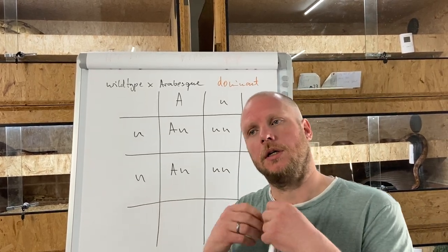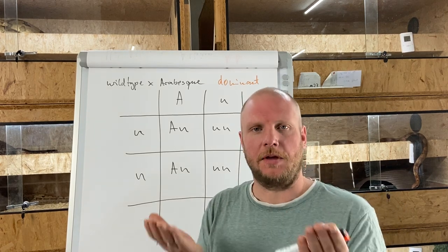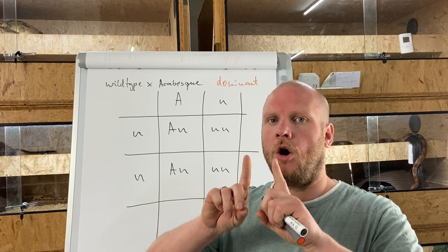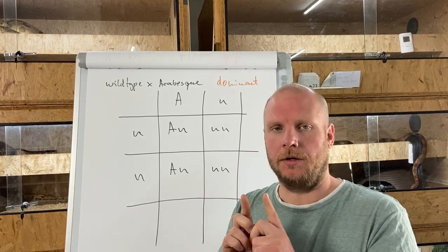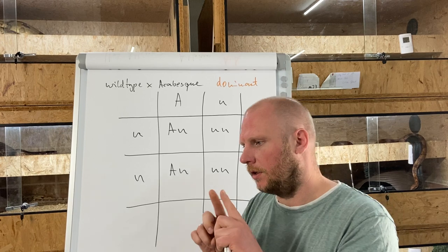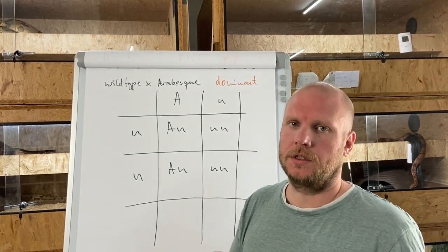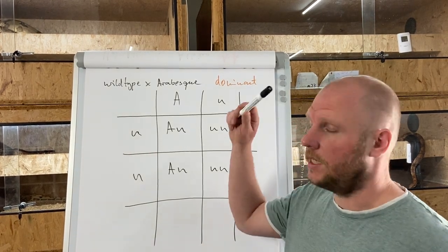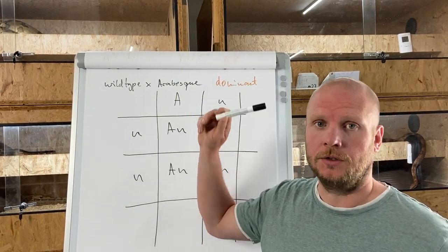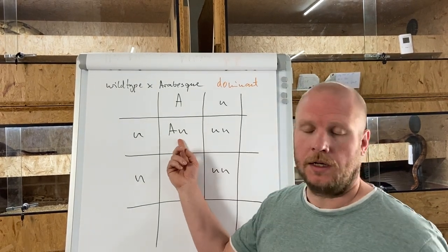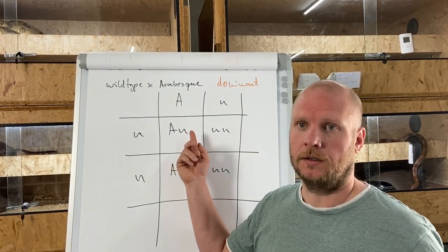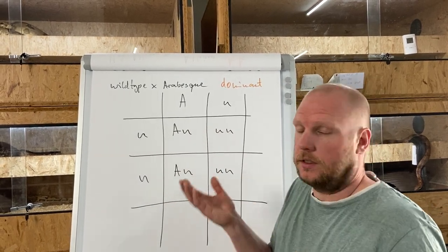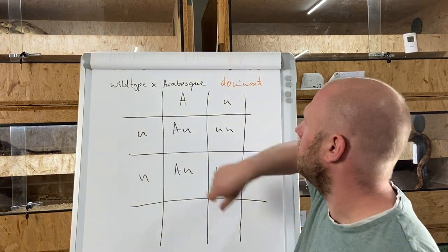To receive a visual recessive animal, like an albino, it's necessary that they are homozygous for albino — so they have only the albino gene on both chromosomes in the chromosome pair. To receive a visual dominant animal, a heterozygous gene is all you need.